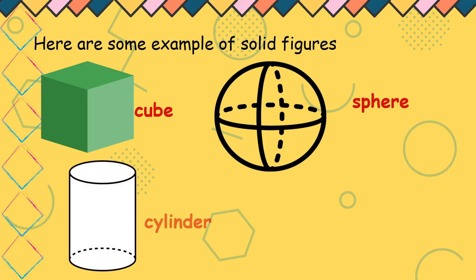Next, it is a cylinder. Mukha siyang lata. Tin can. Ano pa? Drum. Mga baso. Example natin ng cylinder.